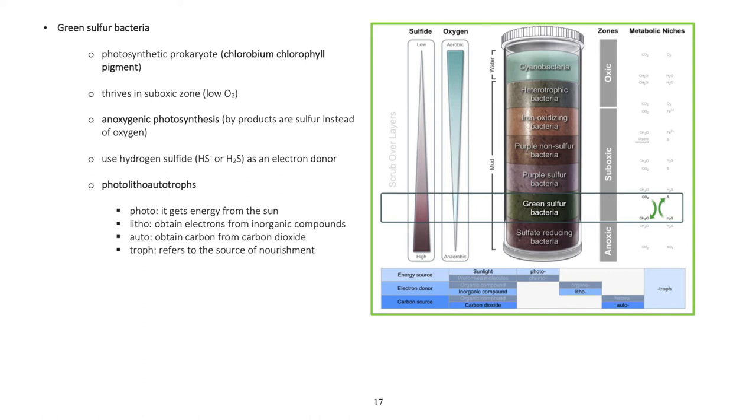Green sulfur bacteria: Photosynthetic prokaryote with presence of chlorobium chlorophyll pigment. Thrives in suboxic zone with low oxygen. Anoxygenic photosynthesis - byproducts are sulfur instead of oxygen. Use hydrogen sulfide as an electron donor. Photolithoautotrophs - photo: gets energy from the sun, litho: obtain electrons from inorganic compounds, auto: obtain carbon from carbon dioxide, troph: refers to the source of nourishment.